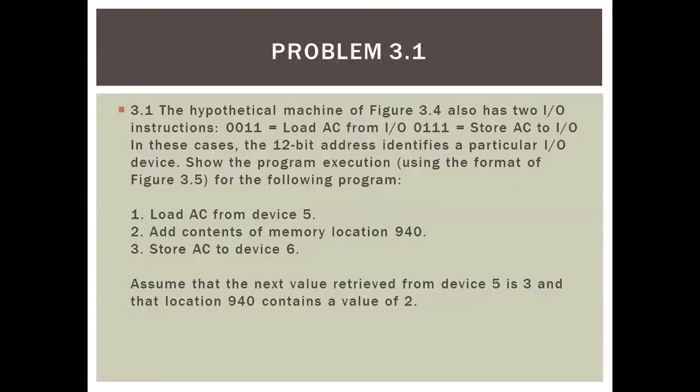This is the first problem, Problem 3.1. The hypothetical machine of Figure 3.4 also has two I/O instructions: 0011 equals load AC from I/O, and 0111 equals store AC to I/O. In this case the 12-bit address identifies a particular I/O device. Show the program execution using the format of Figure 3.5 for the following program: first, load AC from device 5; add contents of memory location 940; and store AC to device 6.